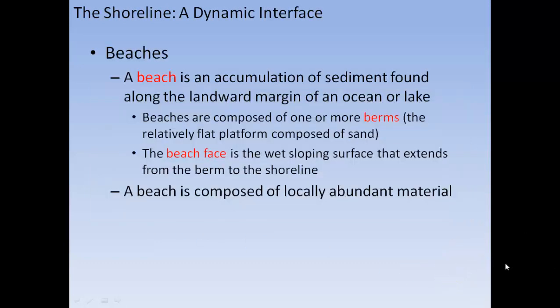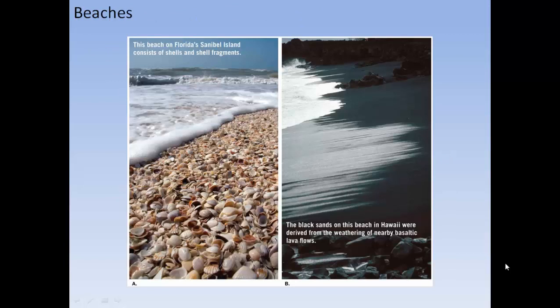A beach is an accumulation of sediment found along the landward margin of the ocean or lake. Beaches are composed of one or more berms — a relatively flat platform composed of sand. The beach face is a wet sloping surface that extends from the berm to the shoreline. A beach is composed of locally abundant material. For example, Sanibel Island, Florida is mostly shells and shell fragments, and a black sand beach in Hawaii is composed mostly of sand from basaltic lava flows.